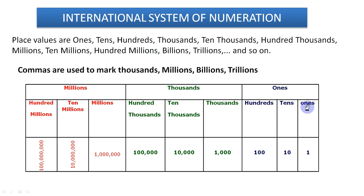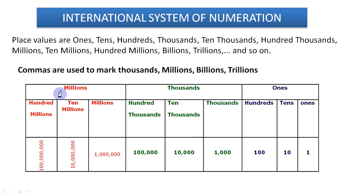The ones period contains three places: ones, tens, hundreds. The second period is the thousands period, which also contains three places: thousands, ten thousands, hundred thousands. Similarly, the millions period has three places: millions, ten millions, hundred millions. Every period has three places. After millions we also have billions, trillions, quadrillions — and for those periods also we have three places each, like 1 billion, 10 billion, 100 billion.